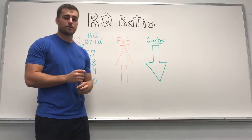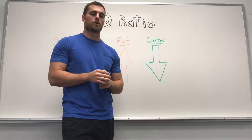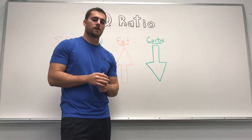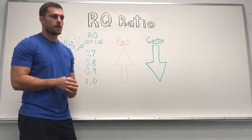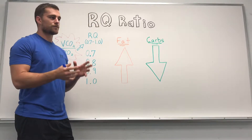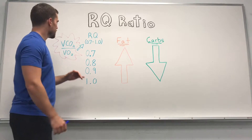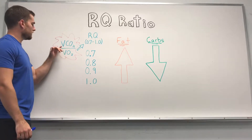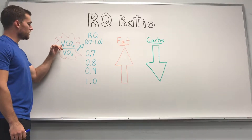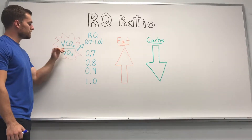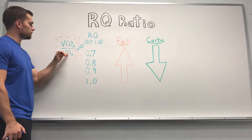RQ ratio stands for respiratory quotient, or it can also be called a respiratory exchange rate. It's a breathing measurement that shows the intensity you're working at, and it's measured by dividing the volume of CO2 by the volume of O2.